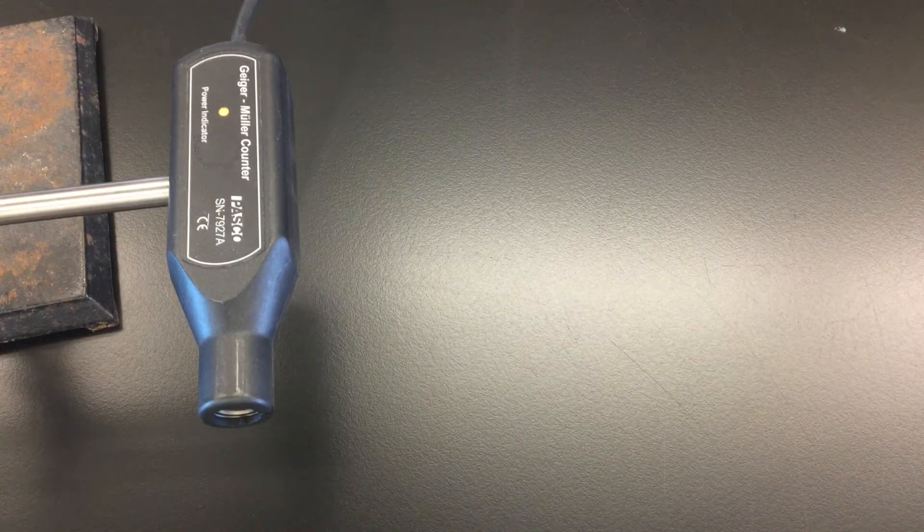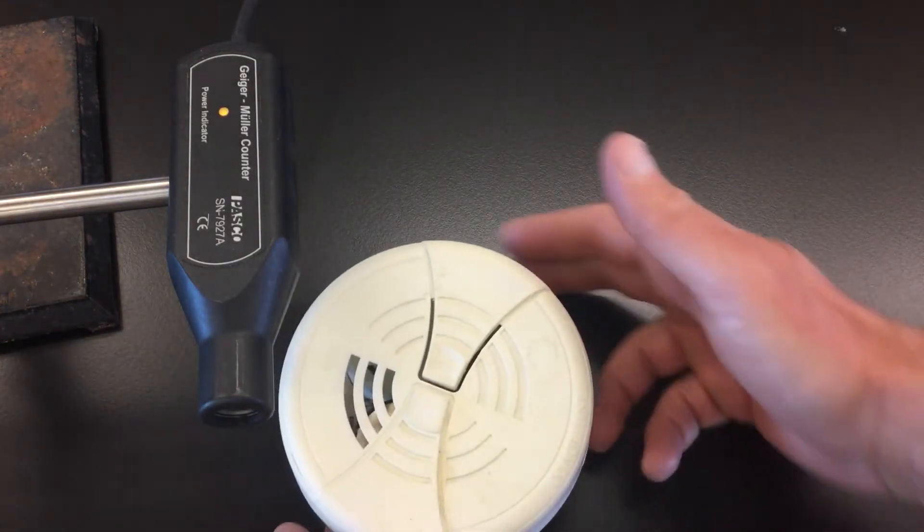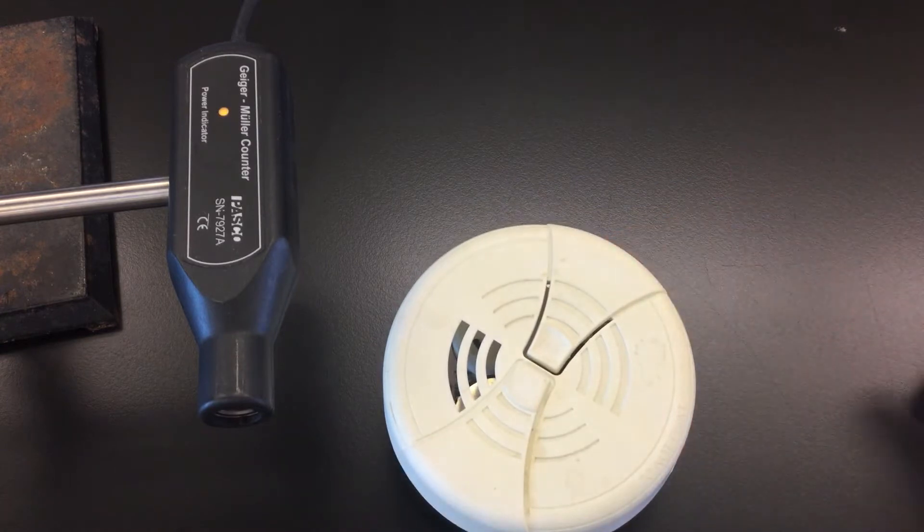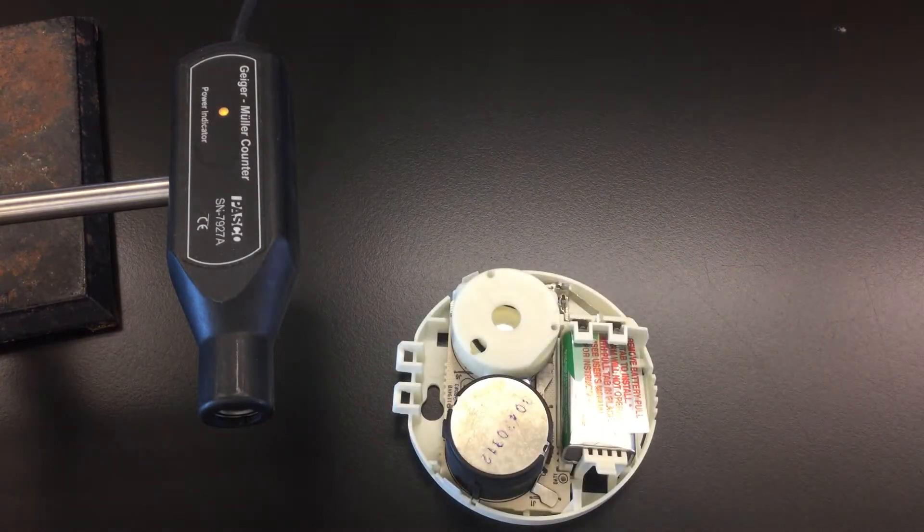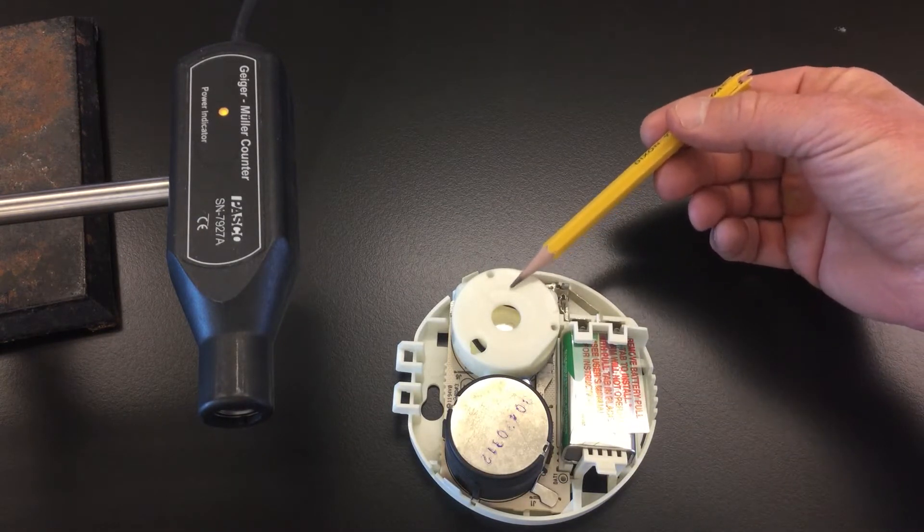What we're going to add to this is a smoke detector I picked up at a local Walmart - a twin pack. If you take the casing off, you see the battery and the part that makes the noise.